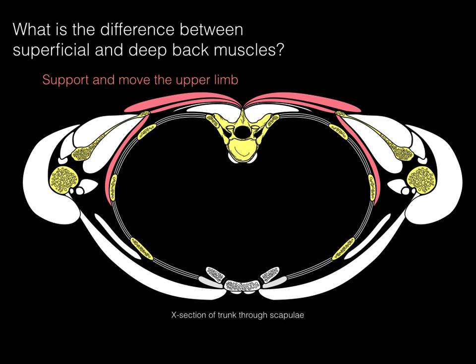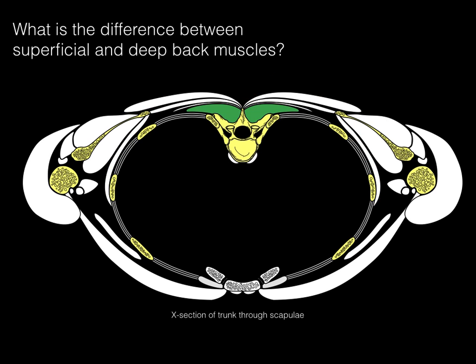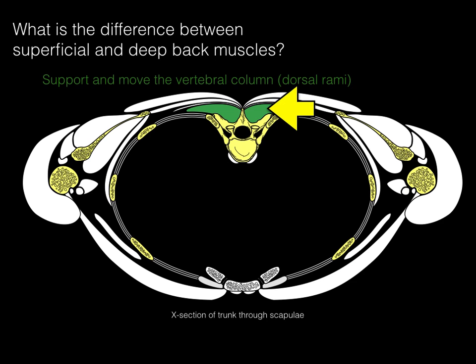Superficial back muscles support and move the upper limb, and because they're hypaxial, they're innervated by the ventral rami. Deeper are the true back muscles — derived from the epimere portion of the myotome. They're true back muscles because they actually support and move the vertebral column. That's their primary purpose, and they're innervated by dorsal rami.